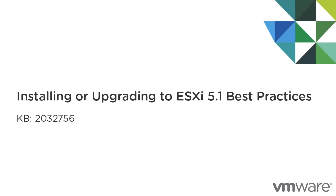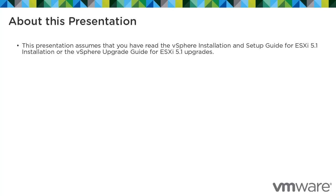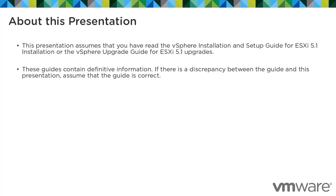This presentation provides information about upgrading to ESXi 5.1 and is based on Knowledge Base Article 2032756. This presentation assumes that you have read the vSphere installation and setup guide for ESXi 5.1 installation, or the vSphere upgrade guide for ESXi 5.1 upgrades. These guides contain definitive information. If there is a discrepancy between the guide and this presentation, assume the guide is correct.